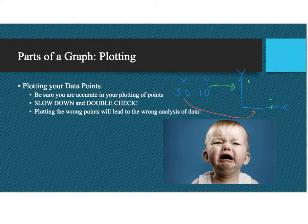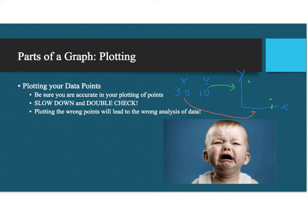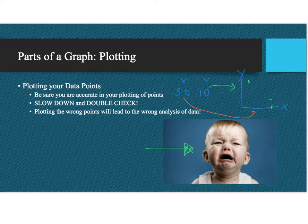If you are looking at your graph and one of the dots seems really off compared to the others, it probably is. Just recheck the data because you either graphed it wrong or there's actual experimental error — either could be the case, but just make sure it's not your graphing that's wrong. Plotting the wrong points on a graph will lead to the wrong analysis of data, so make sure that you slow down and are meticulous about how you're plotting your points.